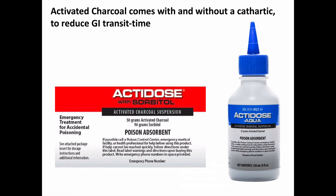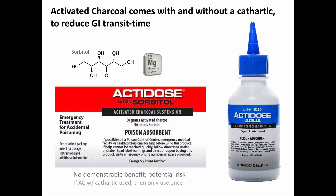Activated charcoal for clinical use comes both with and without a cathartic agent, which reduces GI transit time and theoretically reduces the opportunity for systemic drug absorption. The most common cathartic used is sorbitol, a non-absorbed sugar, while some other preparations contain magnesium salts. The formulation with cathartics makes some theoretical sense, but no studies have demonstrated a clear benefit, and there have been adverse fluid and electrolyte effects. There is no specific indication to use charcoal with cathartics, but if it's what is immediately available, it should be okay to use rather than to delay charcoal administration until the other formulation arrives. If the patient is going to get multi-dose activated charcoal, no subsequent doses should have cathartics.